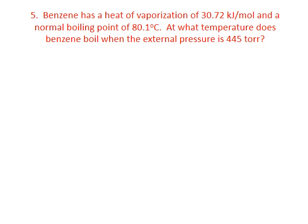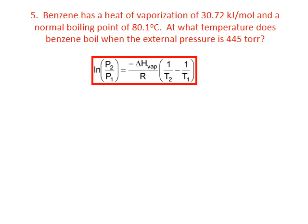In the fifth problem, we're asked to find the temperature at which benzene boils when the external pressure is 445 torr. We're given the heat of vaporization as 30.72 kilojoules per mole, and told that the normal boiling point of benzene is 80.1 degrees Celsius. We'll use the two-point form of the Clausius-Clapeyron equation again.